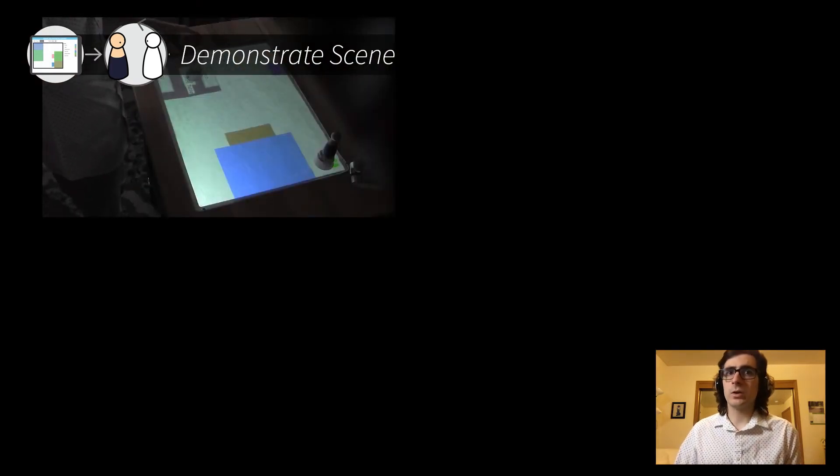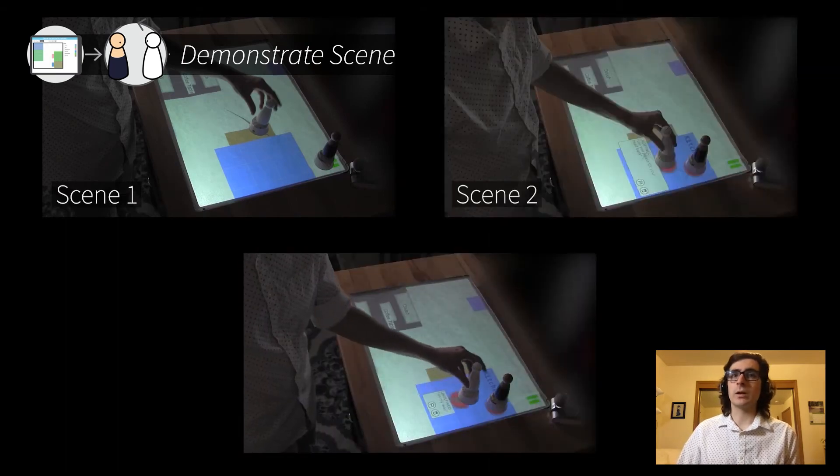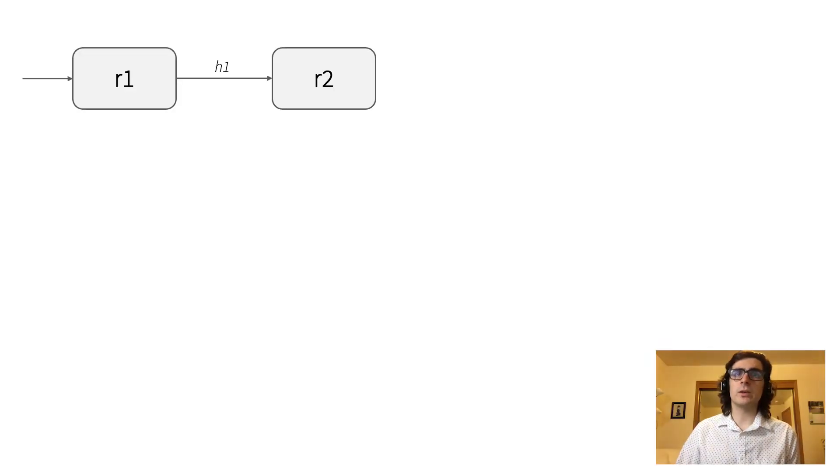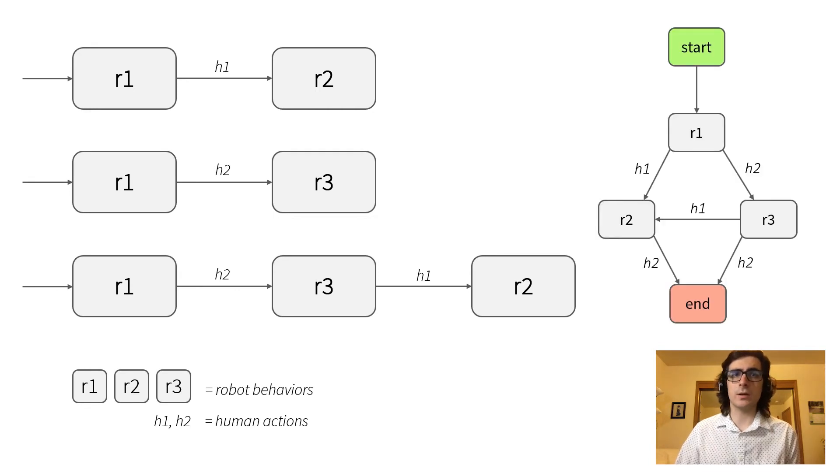Demonstrating multiple scenes shows the robot how it should behave under varying circumstances. In each scene, the demonstrator does something different. Given multiple execution traces, Figaro will then employ program synthesis to assemble a full automaton that accepts each execution trace.